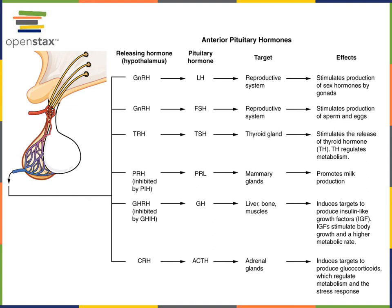Growth hormone is produced by the anterior pituitary and stimulates cell growth and division, and stimulates the growth of muscle and bone. It also stimulates the liver to produce insulin-like growth factor, which also has growth-promoting effects. Prolactin is a hormone produced by the anterior pituitary that stimulates the mammary gland — it stimulates growth of the mammary gland and the production of milk.